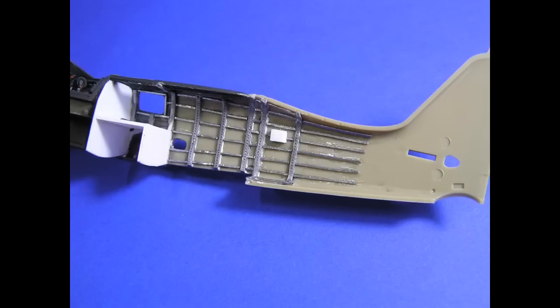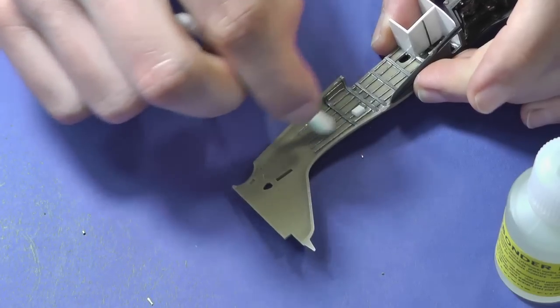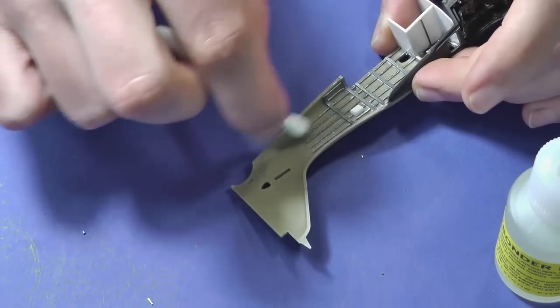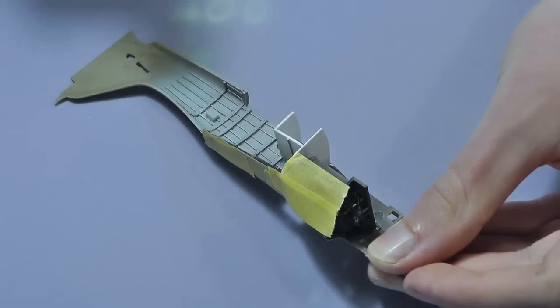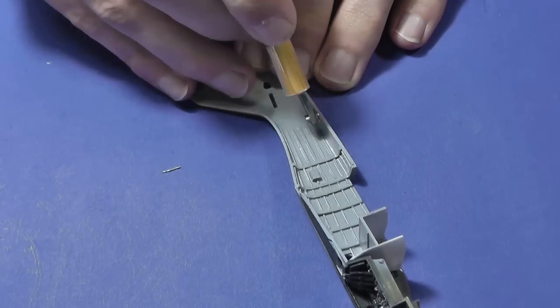I remove the superglue from places where I do not want it with a debonder. It is an adhesive remover. Afterwards I unify everything with a surfacer and run over the ribs edges with a rivet wheel.